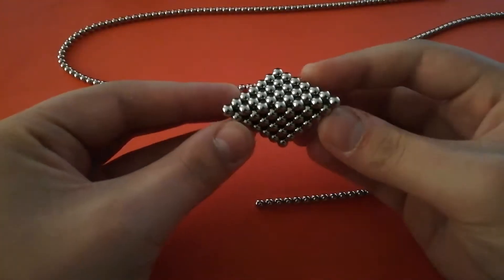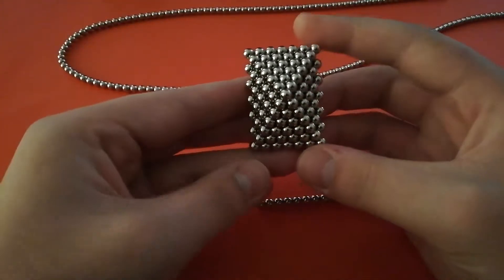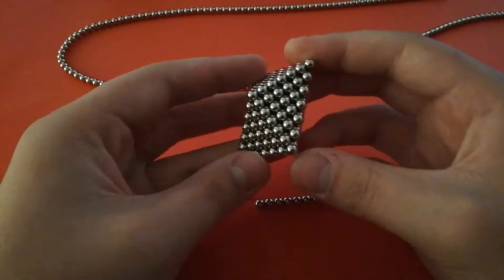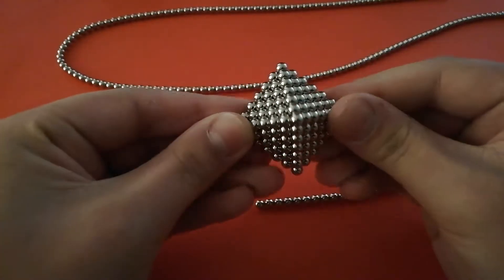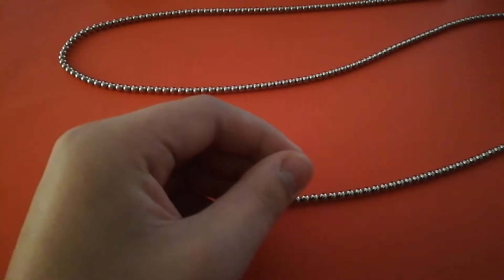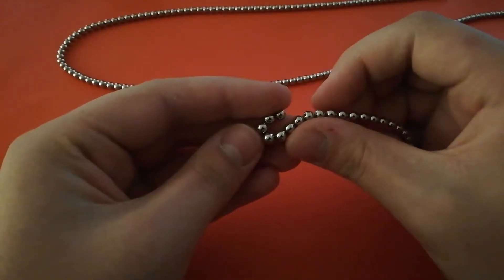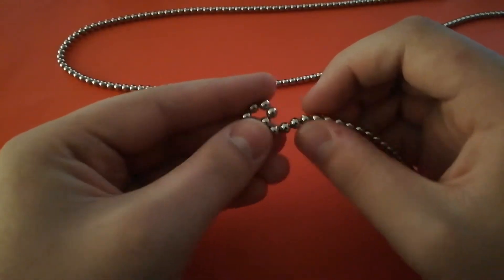This tutorial is for how to build a rectangular octahedron like this one. It takes 190 magnets and can be shifted back into a regular octahedron. To start, you want to make a hexagon of